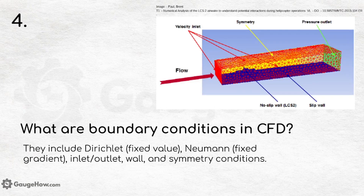What are boundary conditions in CFD? They include Dirichlet (fixed value), Neumann (fixed gradient), inlet or outlet, wall, and symmetry conditions. A picture also presents these conditions visually.